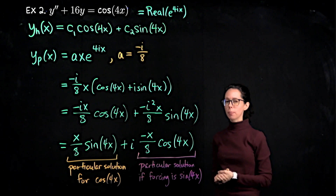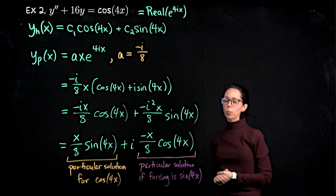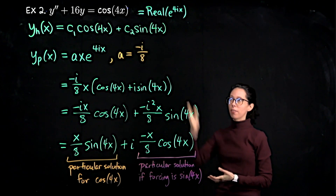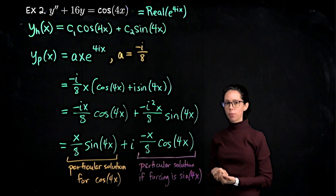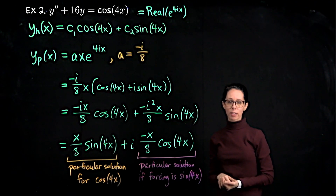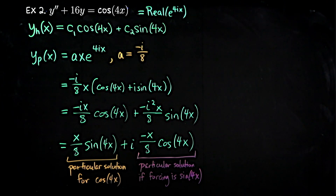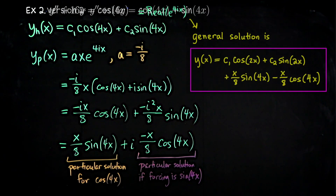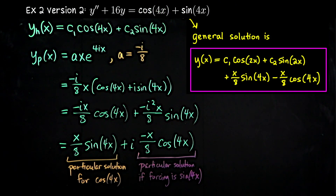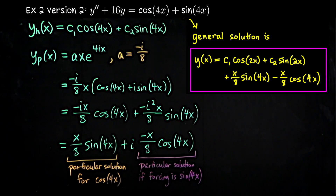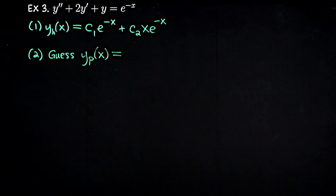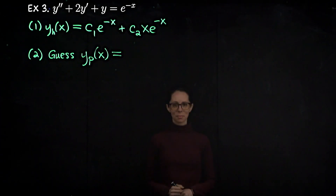Let me leave you with a question: what would the particular solution be if our forcing function on the right-hand side was cos(4x) + sin(4x)?